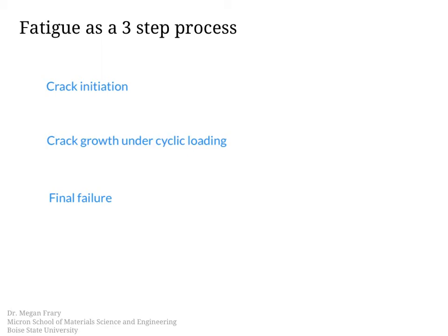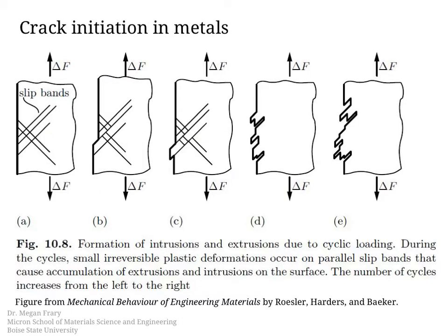Let's walk through each one of these, starting with crack initiation. This figure shows the big picture of crack initiation in metals. Slip bands form due to dislocation motion, and depending on how they are moving, these little surface defects can start to form. As those get magnified, they can essentially turn into cracks, which grow and propagate into the material.